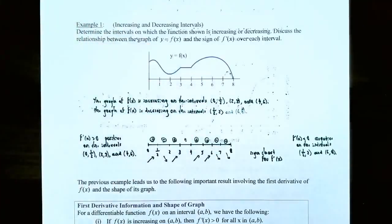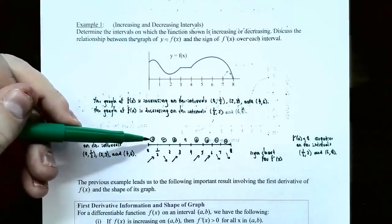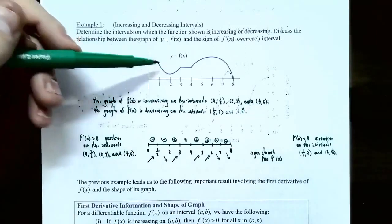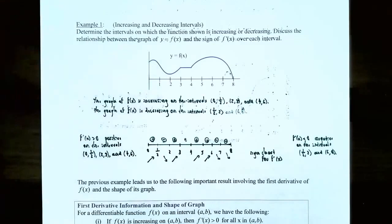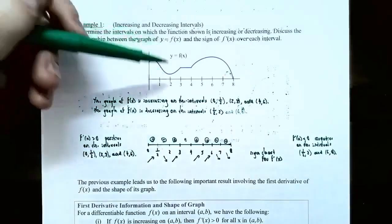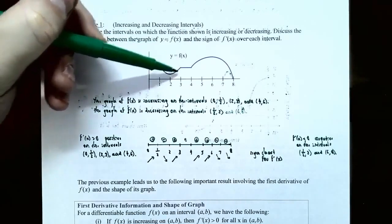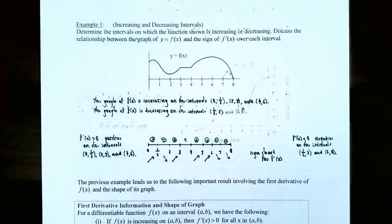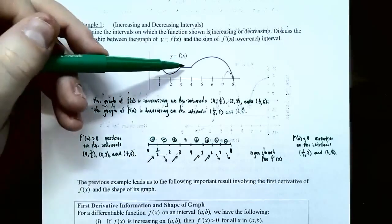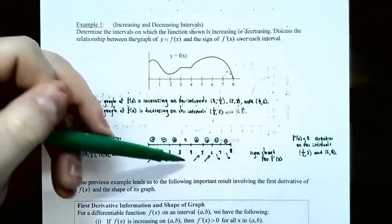The derivative tells us the slope of the tangent line, so we determine whether that slope is positive or negative. Between 0 and 1/2, the tangent line has a positive slope — the derivative is positive and the graph is increasing. Between 1/2 and 2, the tangent line goes down, so the derivative is negative and the graph is decreasing. Between 2 and 3, the slope is positive again. Between 3 and 4, the slope is 0 — neither increasing nor decreasing.